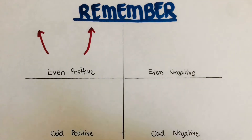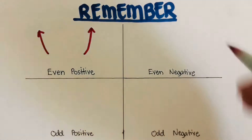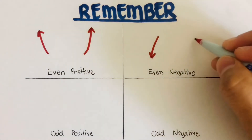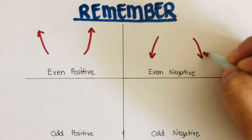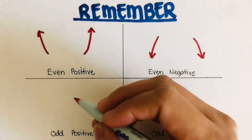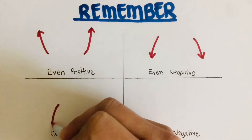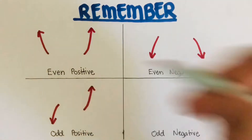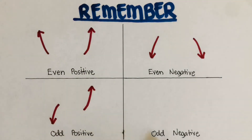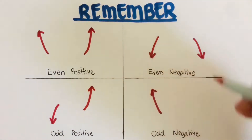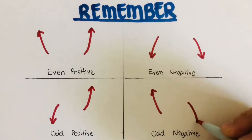A graph is even negative if the left end is directed downward and the right end is directed downward. It is odd positive if the left end is directed downward and the right end is directed upward. And it is odd negative if the left end is directed upward and the right end is directed downward.